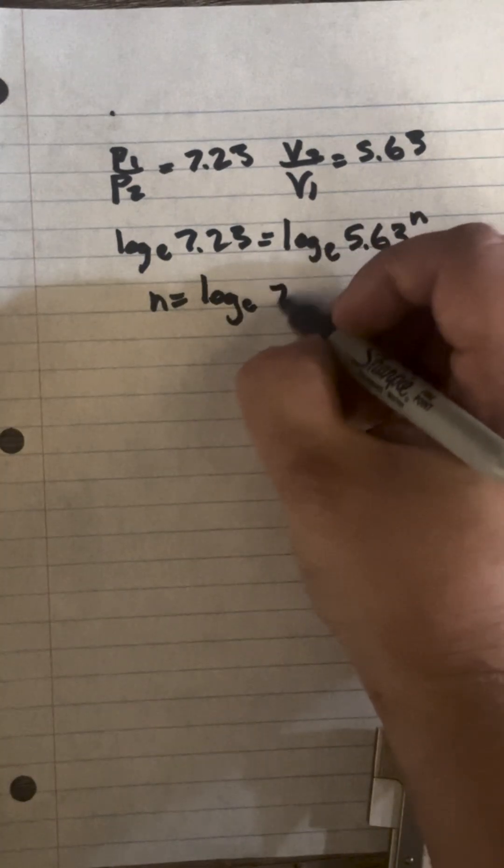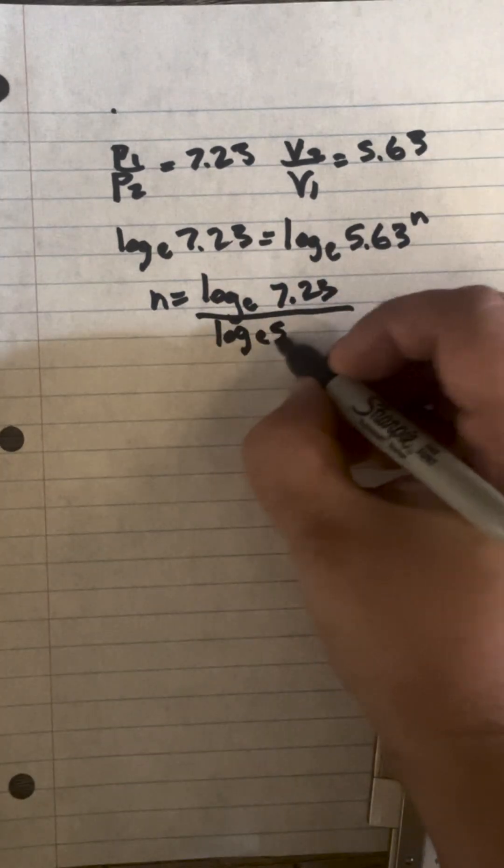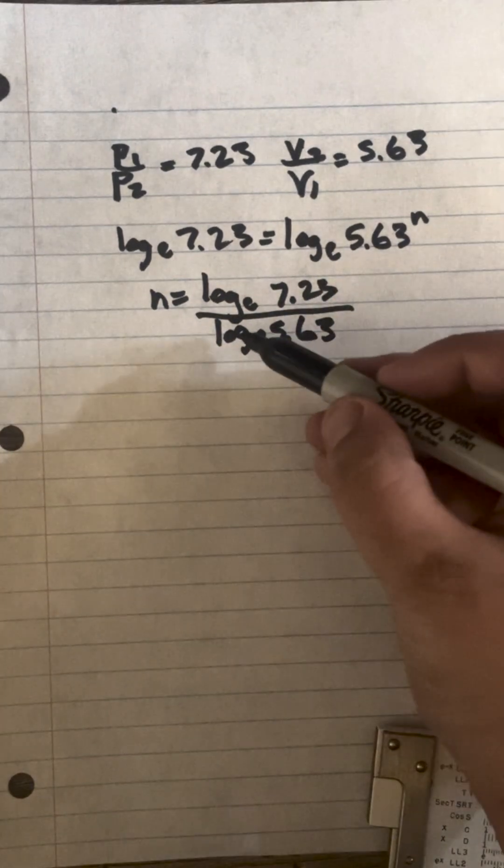So n equals natural log 7.23 over log 5.63. Let's do that one. That one's going to be division to find n.